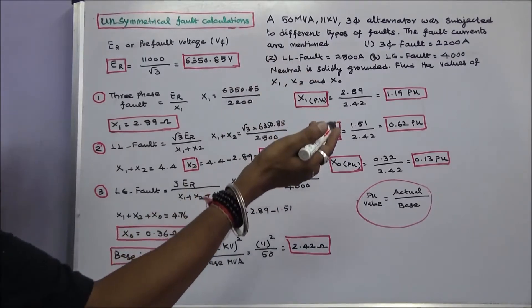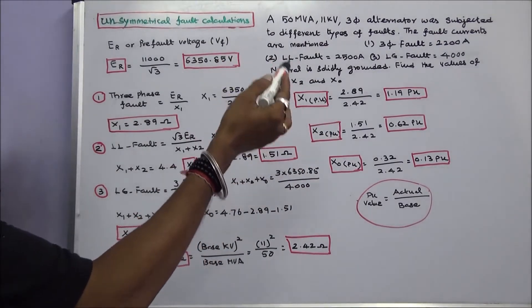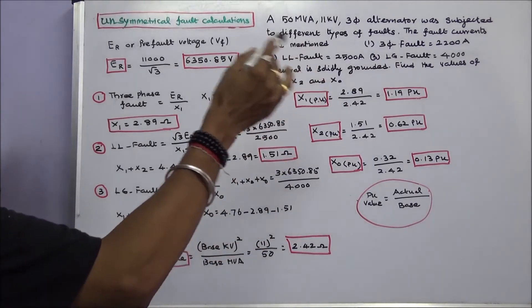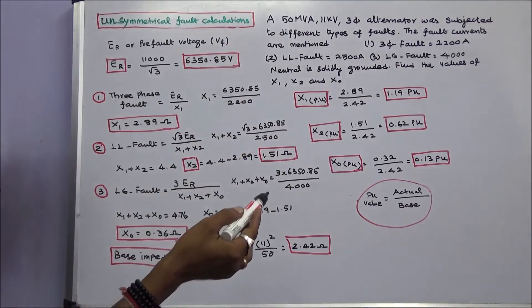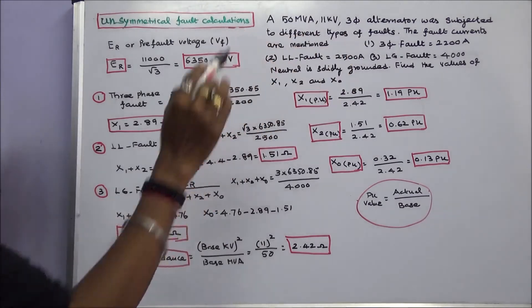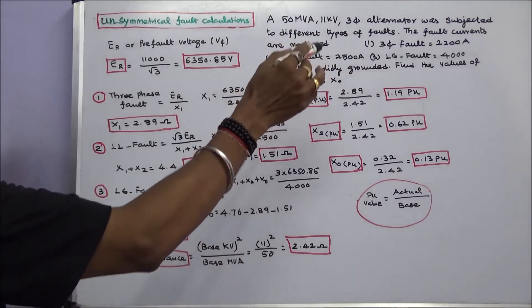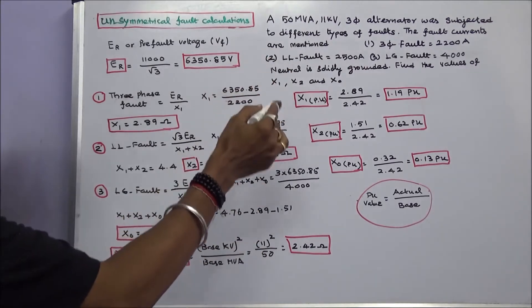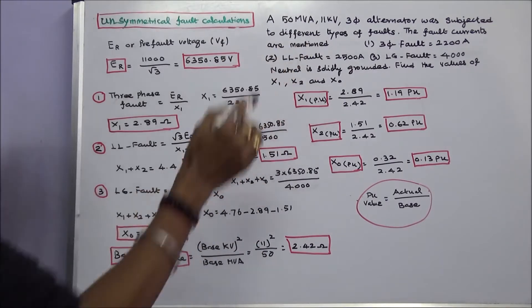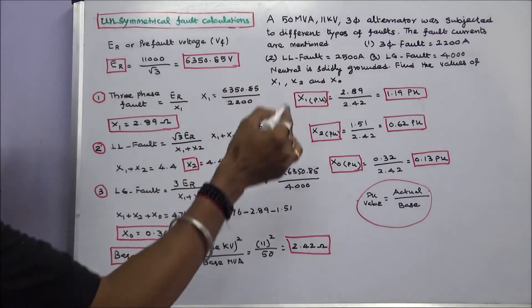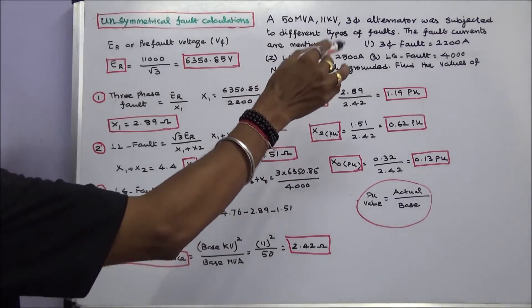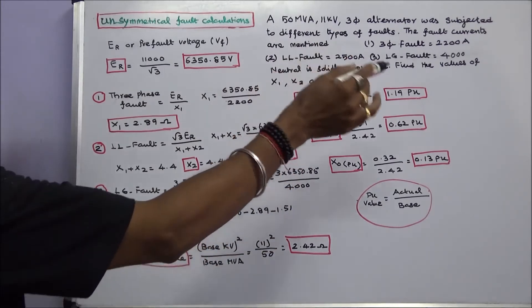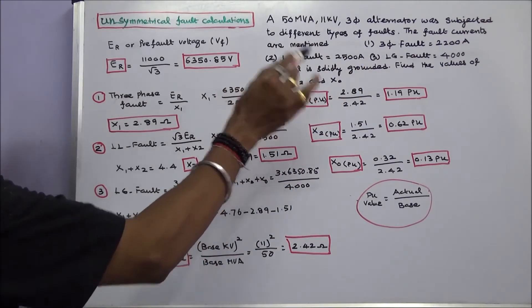In this class we work out one problem. A 50 MVA, 11 kV, 3-phase alternator was subjected to different types of faults. The fault currents are mentioned: for a 3-phase fault the current is 2200 amps, line-to-line fault current is 2500 amps, line-to-ground fault current is 4000 amps. The neutral is solidly grounded. Find the values of X1, X2, and X0.